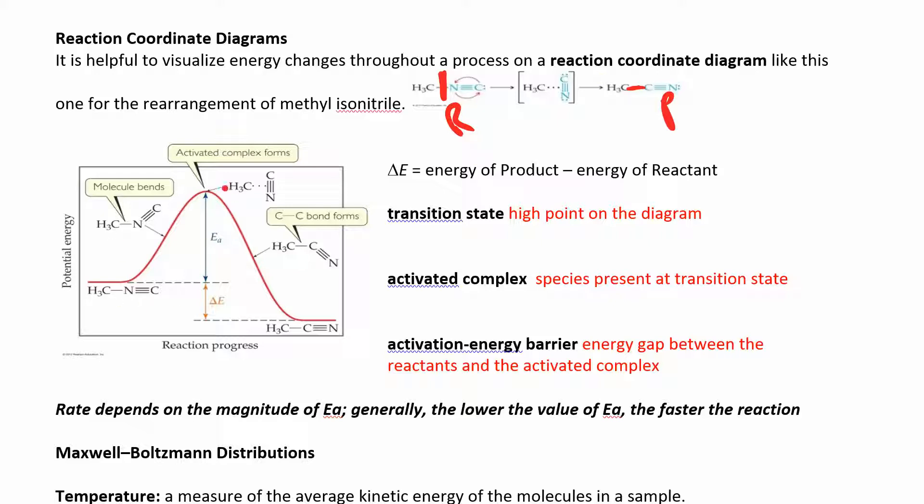Here's your reactants and then the peak from the energy, again plotting energy versus some kind of reaction progress. This is the energy of your reactants. This is the energy of your activated complex at the transition state, the high point on the graph. The activated complex is what's actually the species there. And then your products are over here. You can see the products are lower in energy.